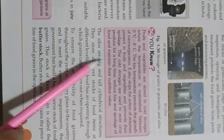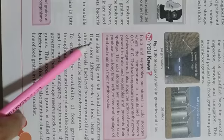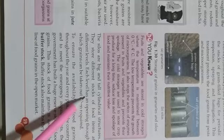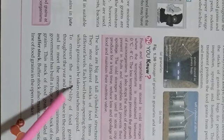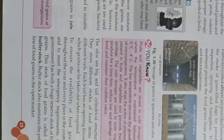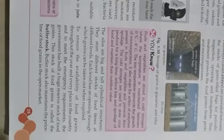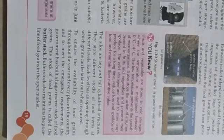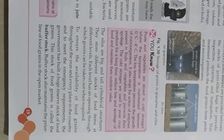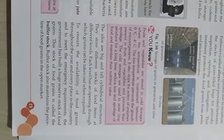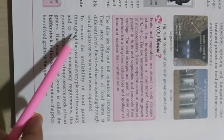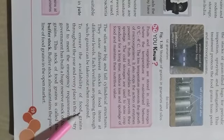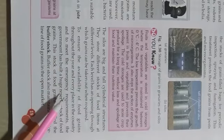Silos are big, tall, cylindrical structures that store different stocks of food items on different levels. Each level has an opening through which grain can be taken out when required. Grains are stored according to quantity and quality — poorer or lesser quantity is used first, and better quality is used later — to ensure availability of food grains throughout the year and in every place in the country to meet emergency requirements.